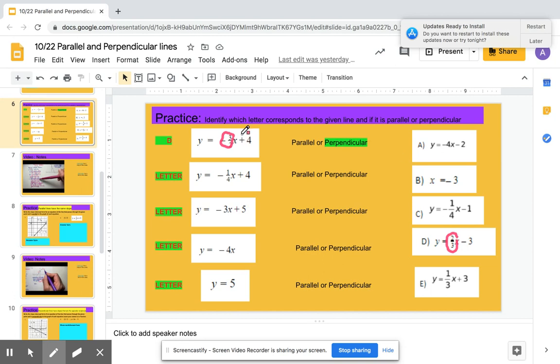So if my original slope is negative 3 halves, and I find the slope of positive 2 over 3, I need to recognize that that's going to be perpendicular.